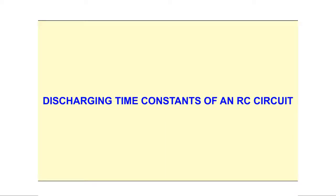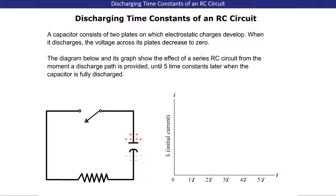Welcome to Discharging Time Constants of an RC Circuit. A capacitor consists of two plates on which electrostatic charges develop. When it discharges, the voltage across its plates decreases to zero.